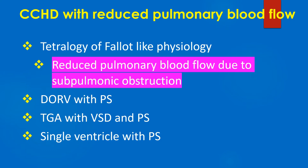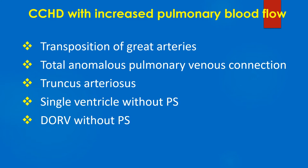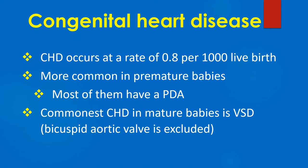Cyanotic congenital heart disease with reduced pulmonary blood flow includes tetralogy of Fallot-like physiology, where reduced pulmonary blood flow results from sub-pulmonic obstruction. Other conditions in this group include double outlet right ventricle with VSD and pulmonary stenosis, transposition of great arteries with VSD and pulmonary stenosis, and single ventricle with pulmonary stenosis. Cyanotic CHD with increased pulmonary blood flow includes transposition of great arteries, total anomalous pulmonary venous connection, truncus arteriosus, single ventricle without pulmonary stenosis, and double outlet right ventricle without pulmonary stenosis.